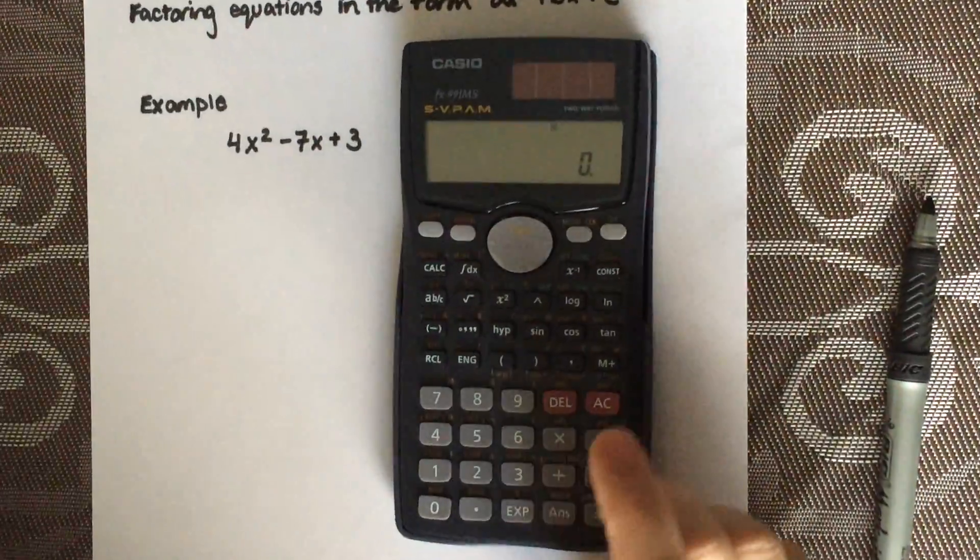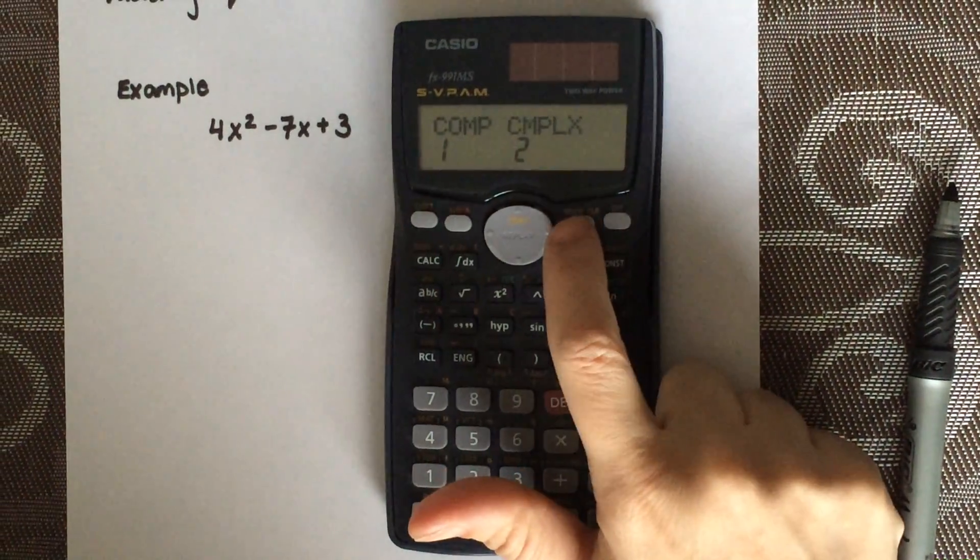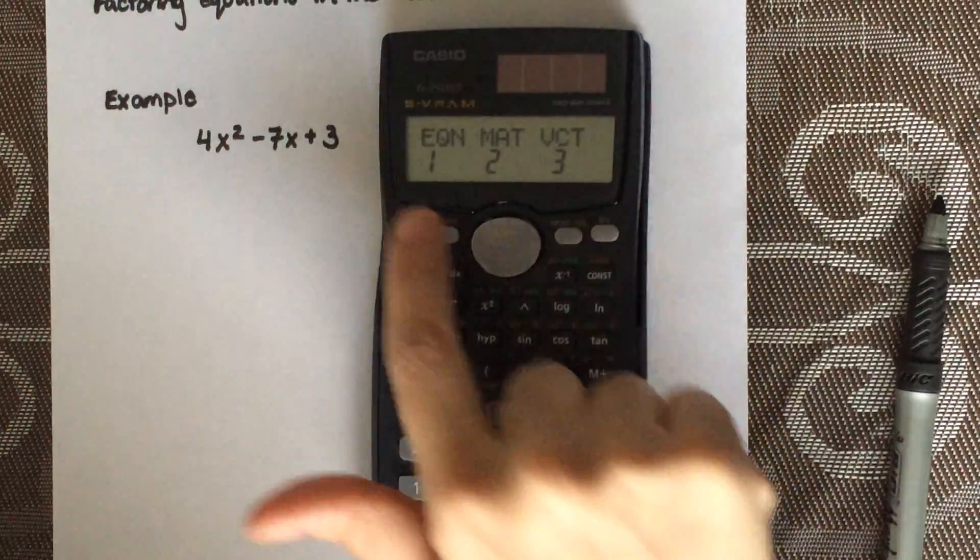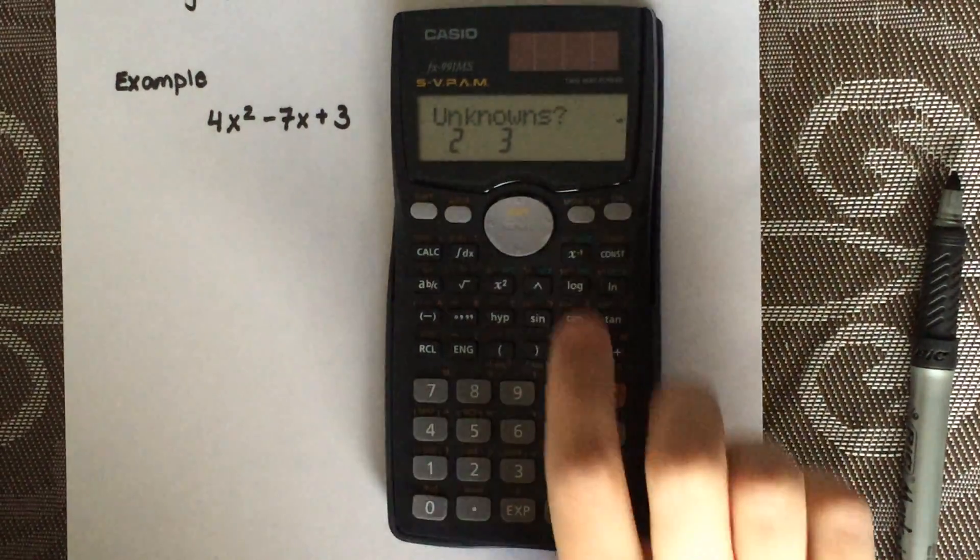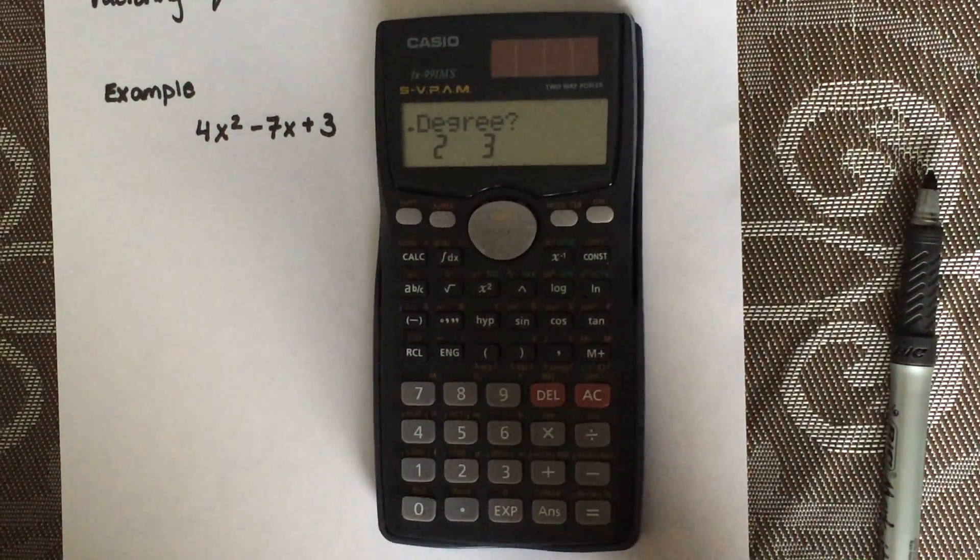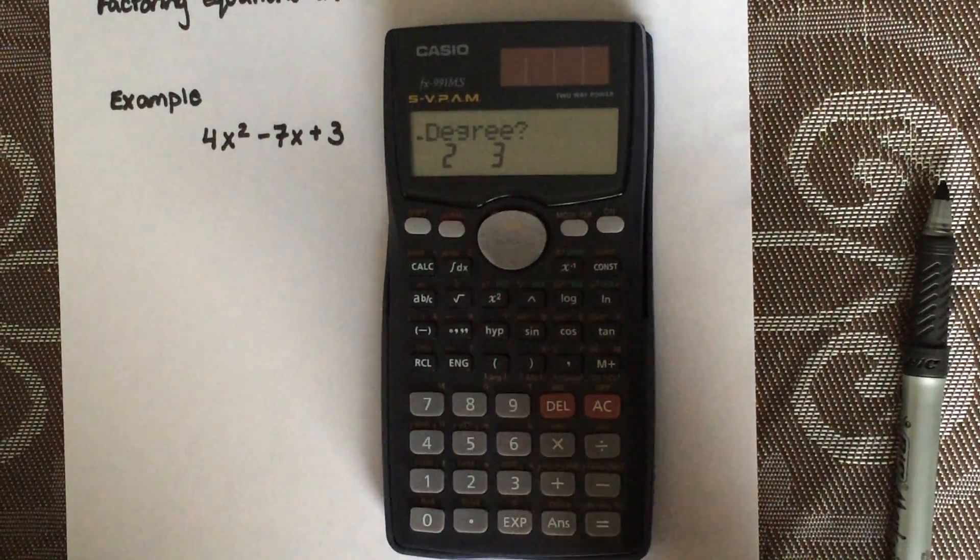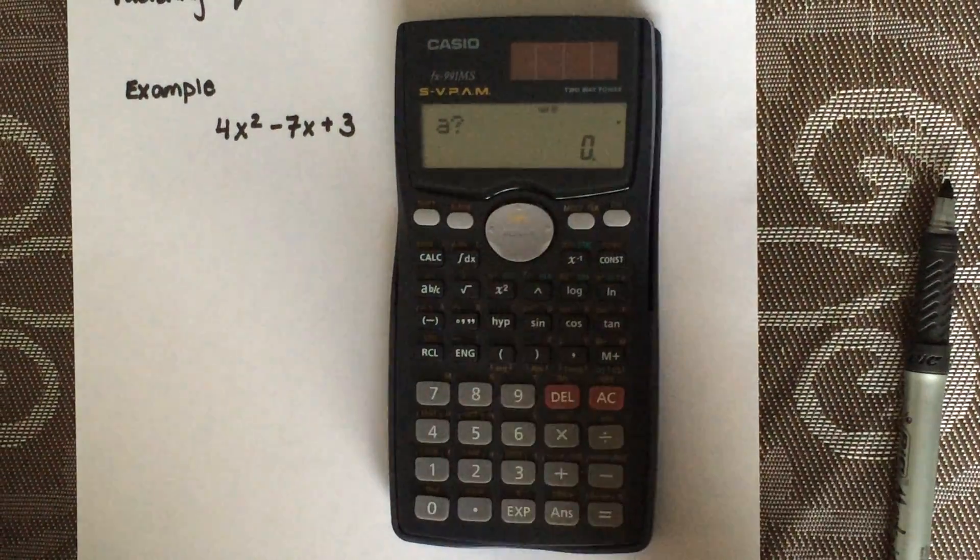So the first thing you do is go to your calculator. You're going to select mode three times until you see equation. Select 1 for equation. Scroll to the right so you see degree. Since it's a quadratic, you have to select 2 for a second degree function.